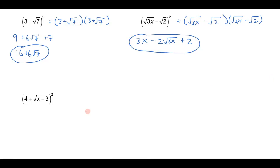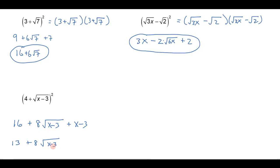Let's do one more: (4 + √(x−3))². I square 4 to get 16, I multiply 4 by √(x−3) to get 4√(x−3), and I double that to get 8√(x−3). Then I square √(x−3) to get (x−3). Combining the 16 and −3 gives me 13, so the result is 13 + 8√(x−3) + x.